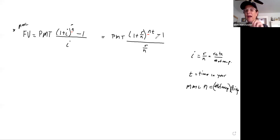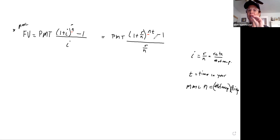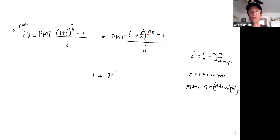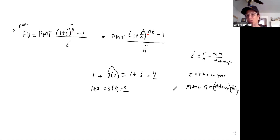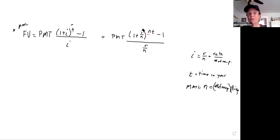Remember, your calculator does not know order of operations. It only works based on how you enter values. For example, if you enter 1 + 2 × 3 straight through, the calculator does 1 + 2 first and then multiplies by 3, giving 9 — but order of operations says multiply first, giving 7. You have to know how to use your calculator correctly.